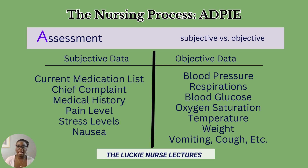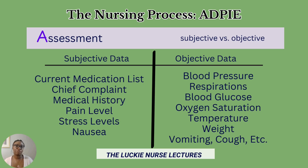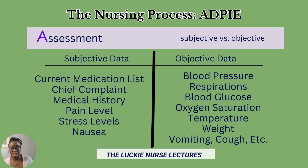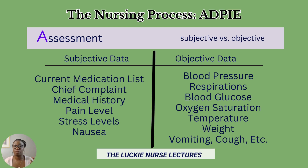Next to the subjective data column, we have the objective data column — information you don't need to sit and talk with the patient to observe; you can see it with your own eyes. That includes all vital signs: blood pressure, respirations, blood glucose, oxygen saturation, temperature, and weight. It also includes signs and symptoms like vomiting or a cough. Nausea is something patients must tell us — that's subjective — whereas vomiting and coughing we can see and hear, making those objective data.